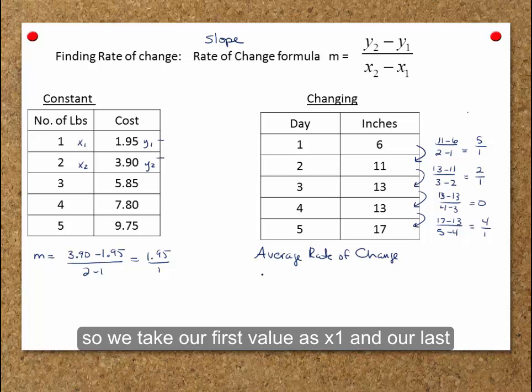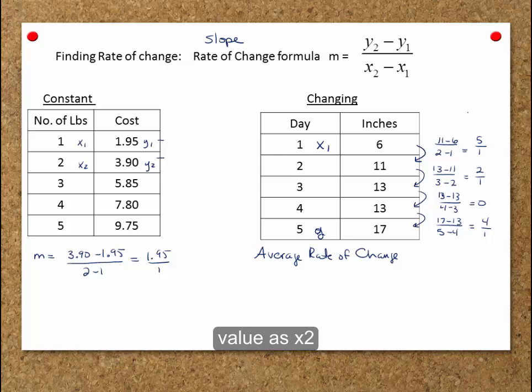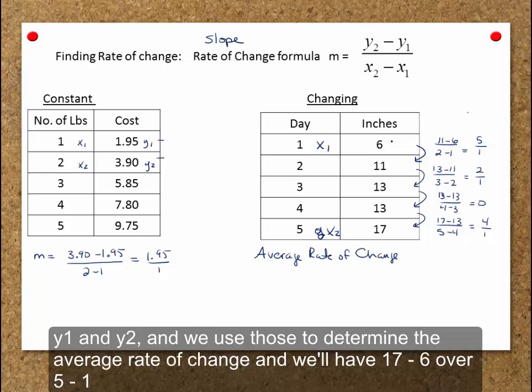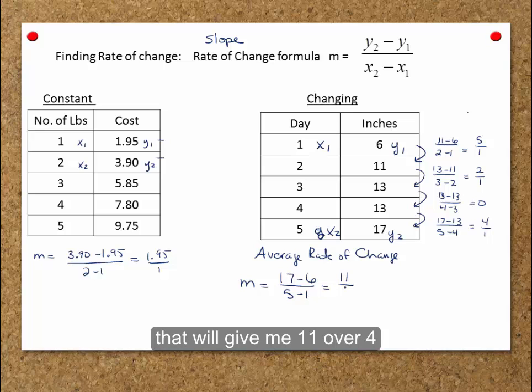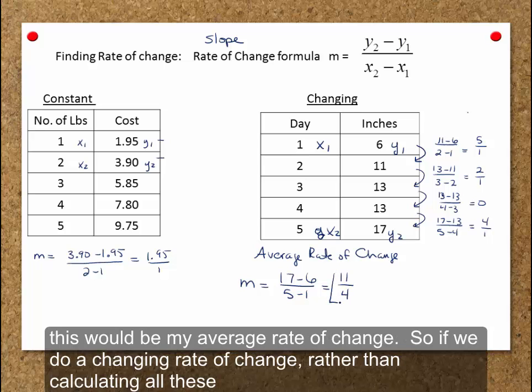So we take our first value as x1 and our last value as x2, y1 and y2, and we use those to determine the average rate of change. And we'll have 17 minus 6 over 5 minus 1, that will give me 11 over 4. This would be my average rate of change.